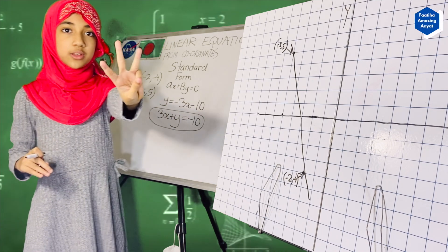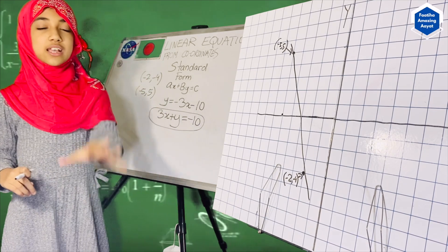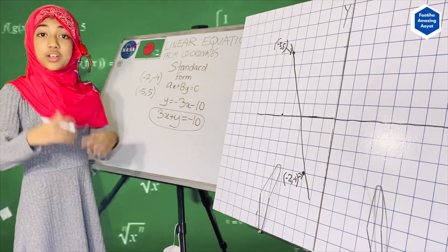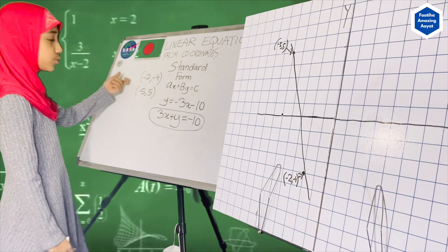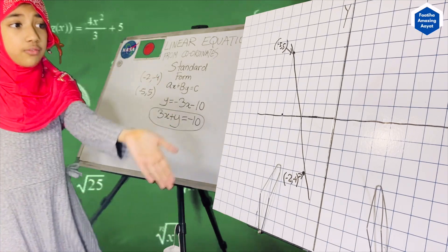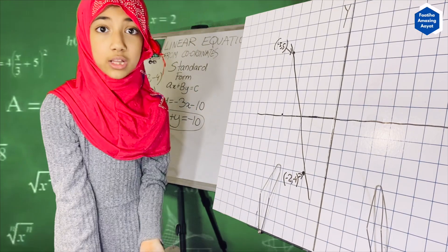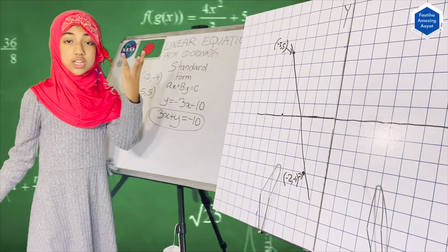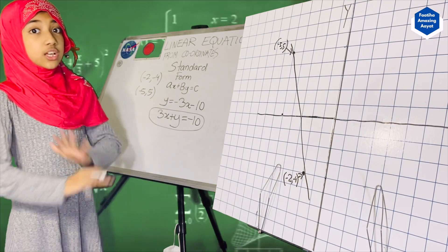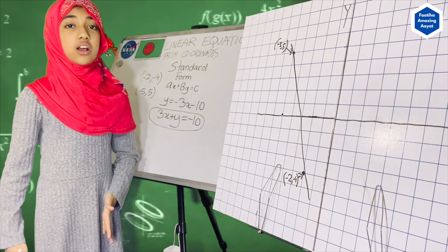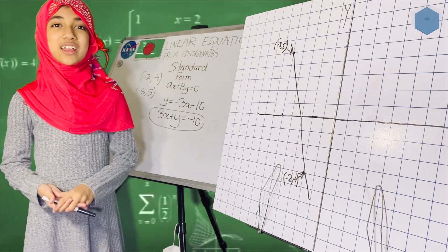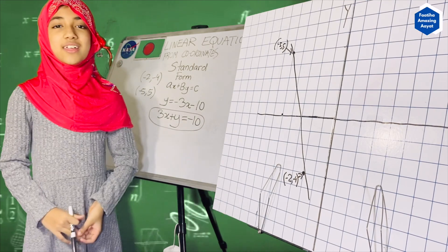So these are the three types of equations that you can do with two sets of coordinates. We got the two sets of coordinates — minus 2, minus 4 and minus 5, 5 — drew the graph and the line, and figured out all three types of equations. With any two sets of coordinates, we can write down any of the types of equations and even draw our graph. I hope you all enjoyed this video and learned from it. Thank you, and assalamu alaikum.